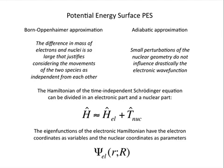The eigenfunctions of the electronic Hamiltonian have electron coordinates as variables and nuclear coordinates as parameters, as reported here. The solution of the electronic Hamiltonian gives the potential energy of a molecule, so then the term Potential Energy Surface.